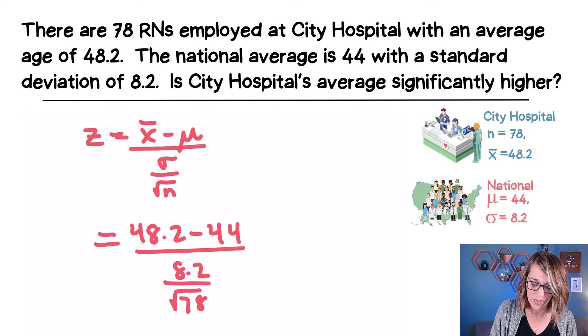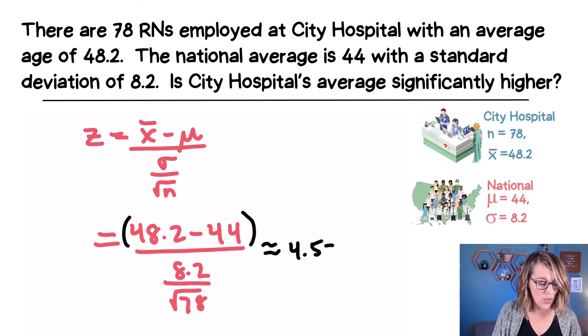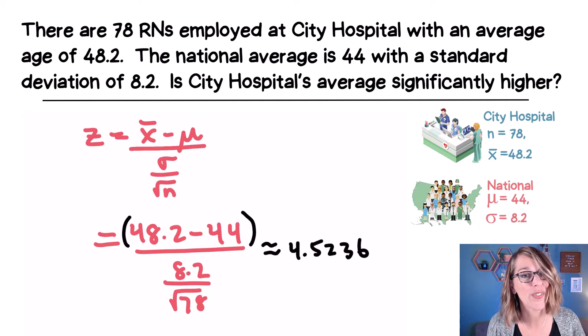I'm going to very carefully put this into my calculator using parentheses around that numerator. And I end up with that Z statistic of 4.52358. So if I round that to four decimal places, I'm going to have 4.5236.